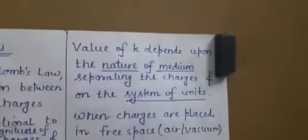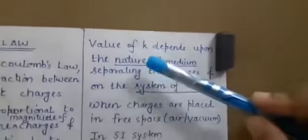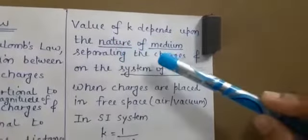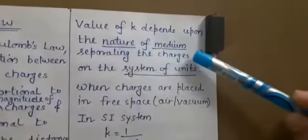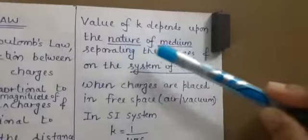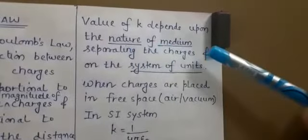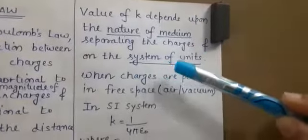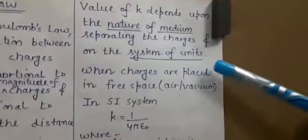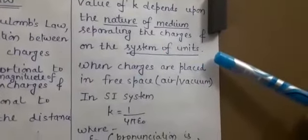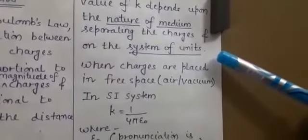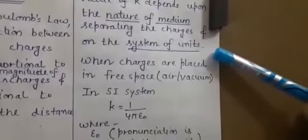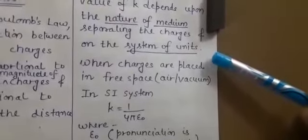The value of constant K depends upon: first, the nature of the medium separating the charges; and second, the system of units. You have studied in class 11 that there are different kinds of systems of units — SI system, CGS system — so we will introduce those here also.